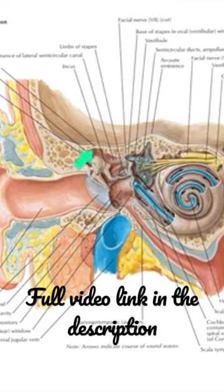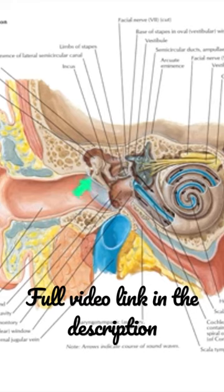So, you get the roof, then you have the floor, and the anterior wall — here it is removed — and this is the posterior wall, and this is the lateral wall and this is the medial wall.